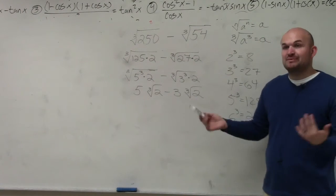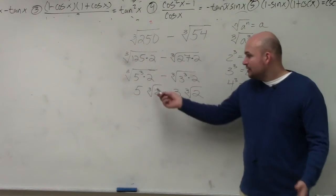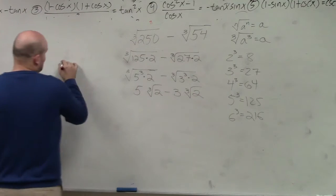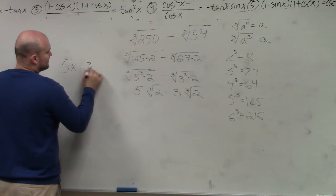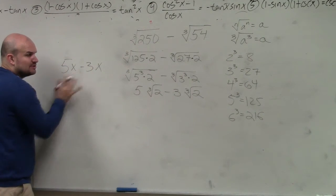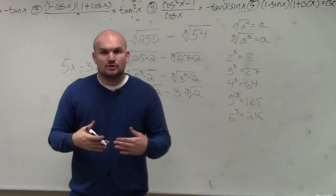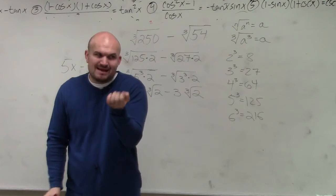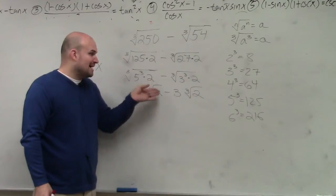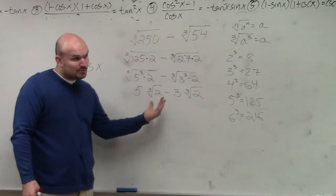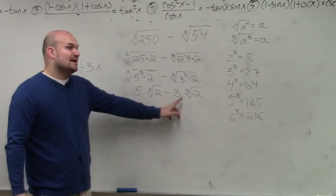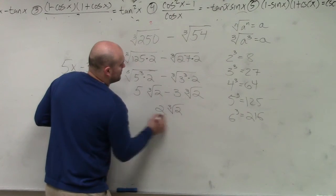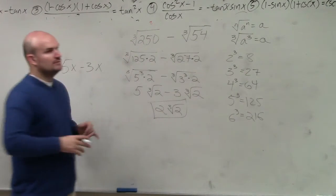When adding or subtracting, they have to be like terms, meaning you have to have the exact same index and exact same radicand. Just like we did with variables — you don't do anything with the x's: 5x minus 3x is 2x, right? The like term remains the same. So 5 times the cube root of 2, minus 3 times the cube root of 2 — the cube root of 2 remains the same. All I do is subtract the coefficients: 5 minus 3 is 2 cube root of 2. Done.